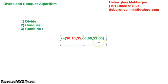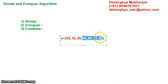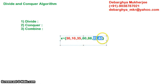So maybe three elements on one side and four on the right side. From the left part we can further split into 30 and 10 in one part and 35 in another. From the right side we can have 60 and 88 in one part and 22 and 63 in the other part.